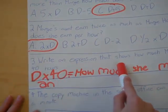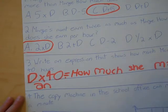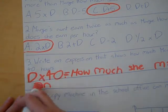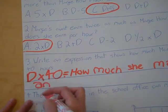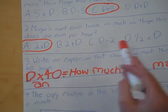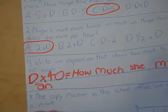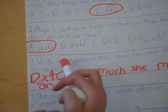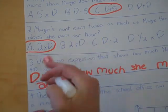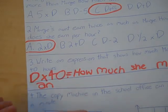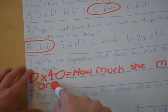It says write an expression that shows how much Marge earns in 40 hours. We would have to do D because we know Marge earns D dollars an hour, and so D would be one hour, and then for 40 hours, so it would be D times 40.